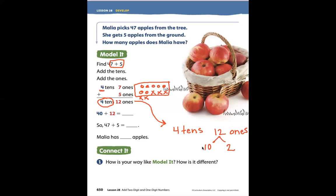Right? So now we have one 10 and two ones, and then they added the tens together. Here they have four tens and one 10 equals five tens and two ones. That's it.